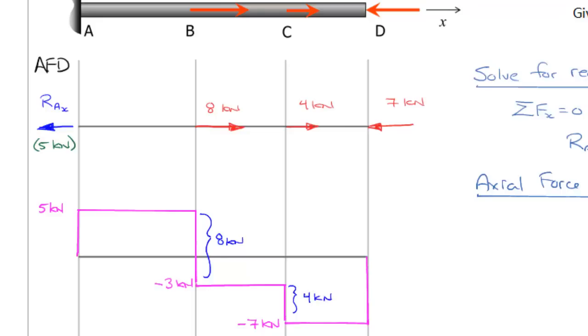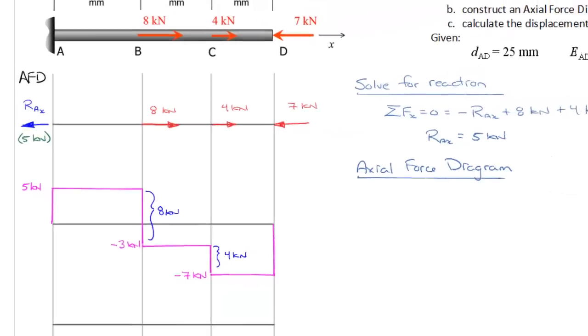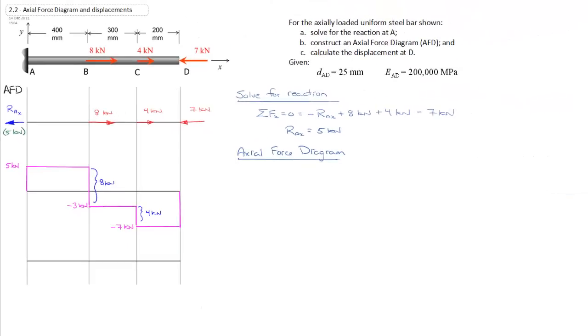And that's the graphical method. We'll see this process of being able to move left or right through the member repeated several times when we do shear force diagrams and bending moment diagrams. It works fairly well—it's a quick way to get through the problem.